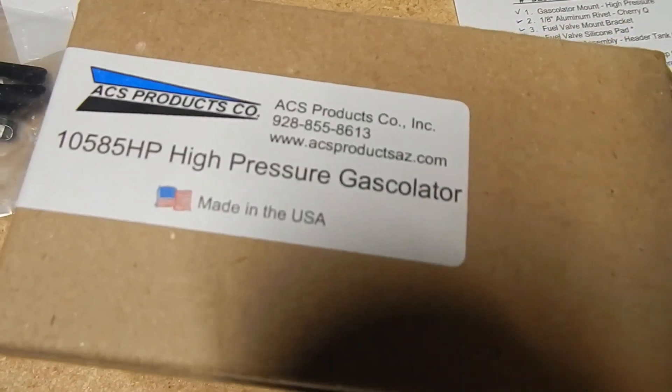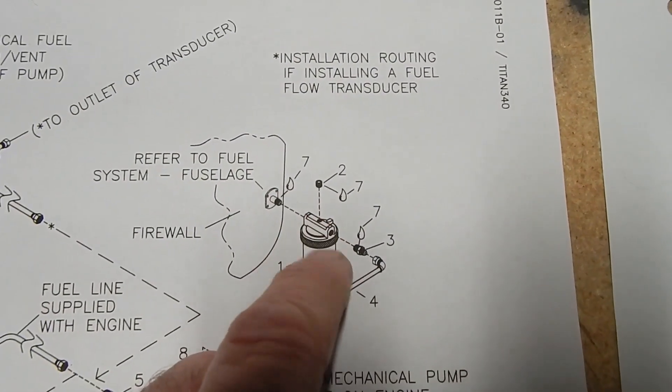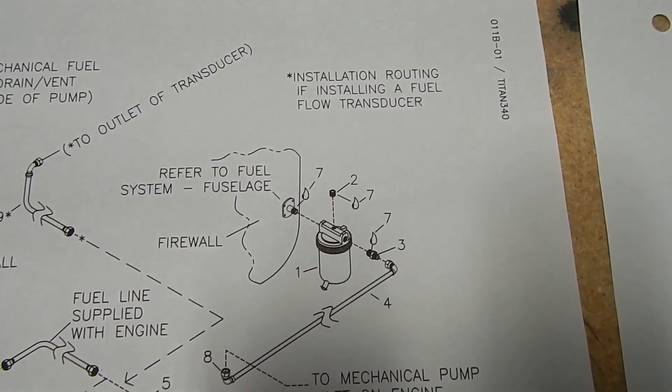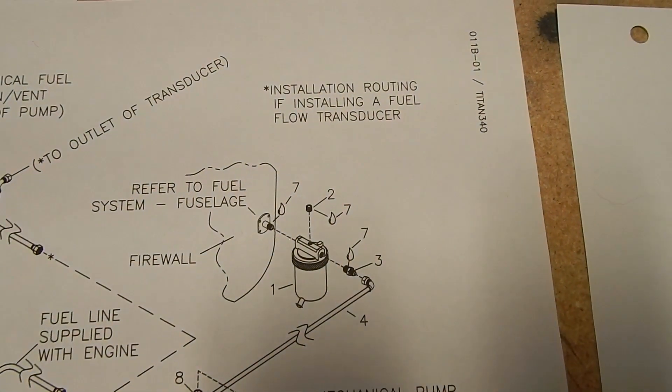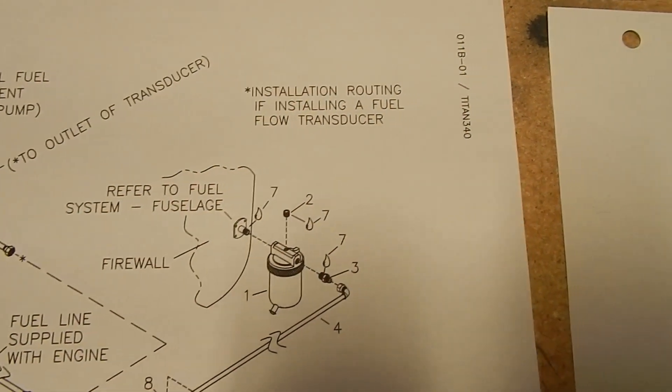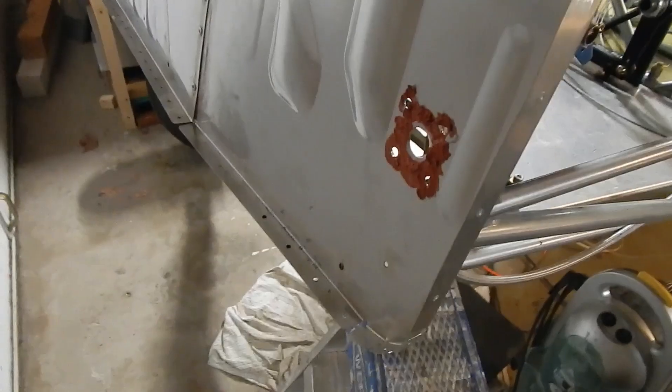Then your gascolator is going to attach onto that mount. Your gascolator looks like this, comes in a box, and then there's some gas fittings that get attached. And I guess that's the installation of the gascolator.